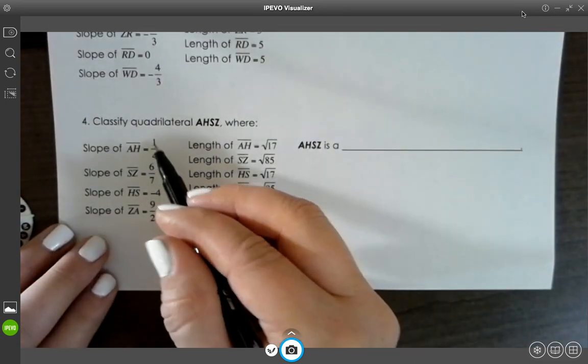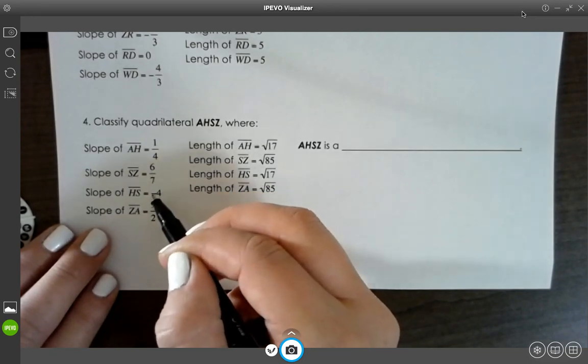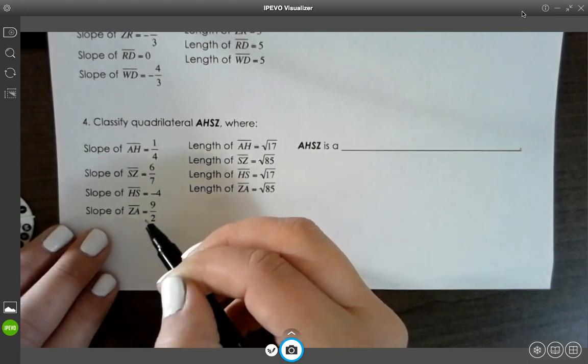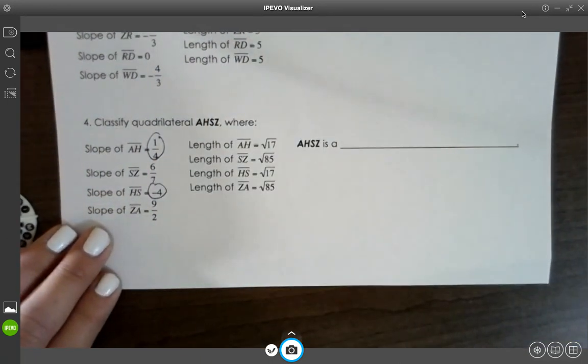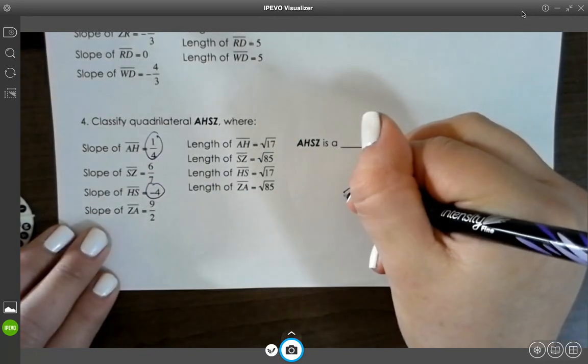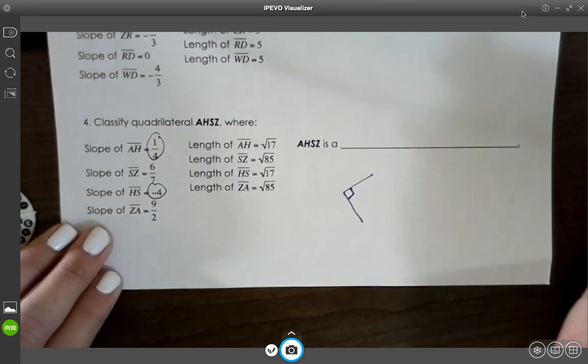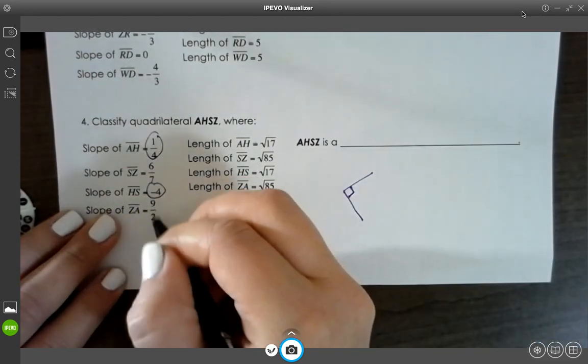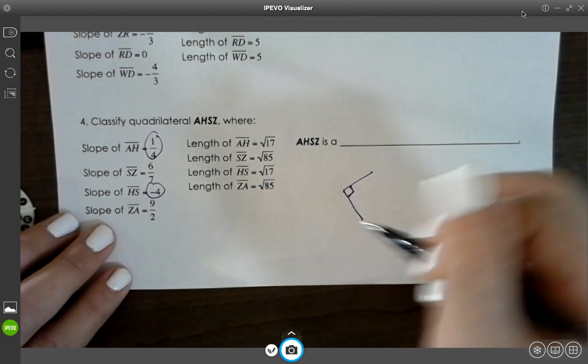I'll do this last one with you. If we look here, 1 over 4, 6 over 7, negative 4, and 9 over 2. So I know that 1 over 4 and negative 4, they're not parallel, but they are perpendicular, which is 90 degrees. And the other ones are not the same slope, so that means they're not parallel, and they're not perpendicular.